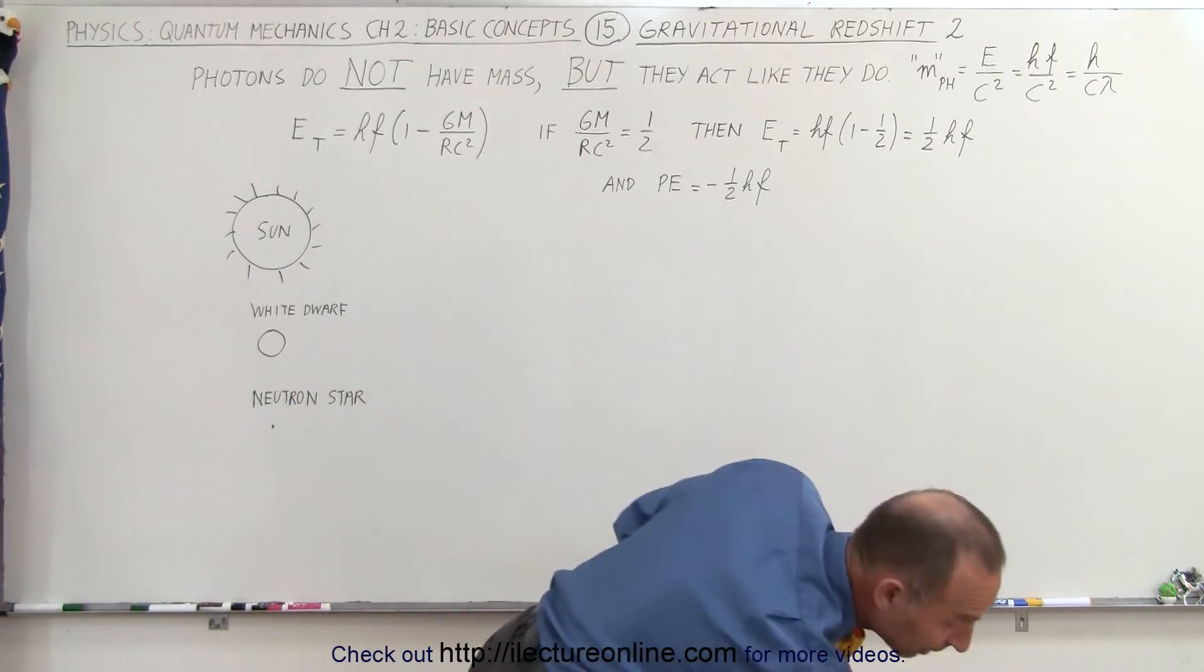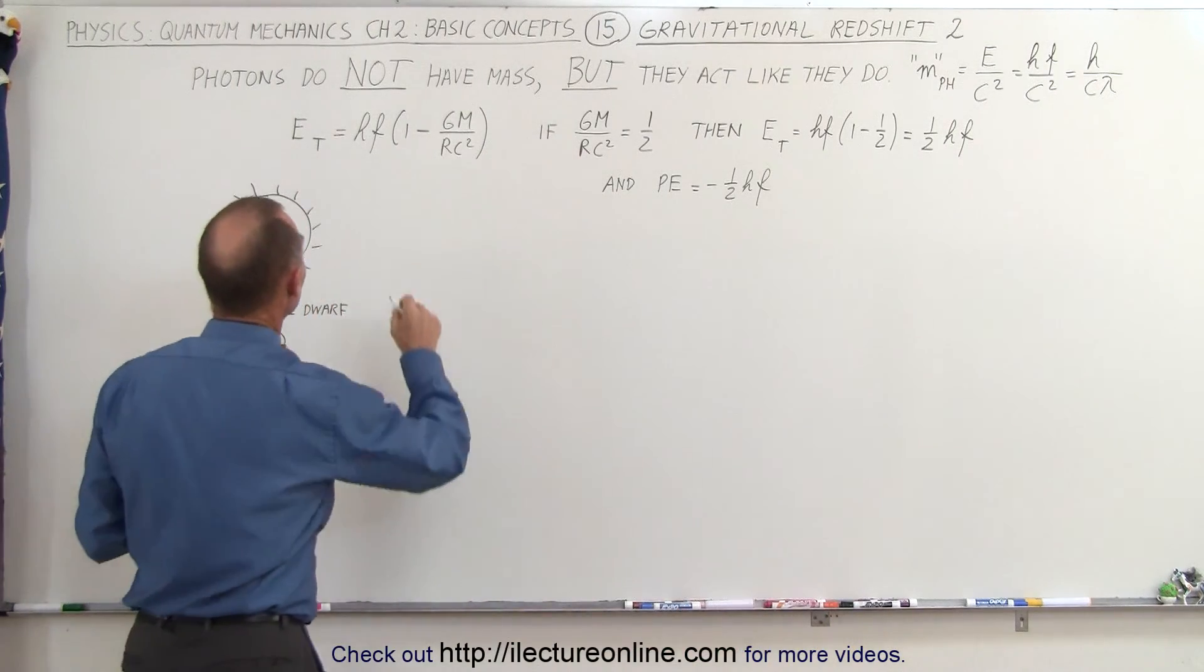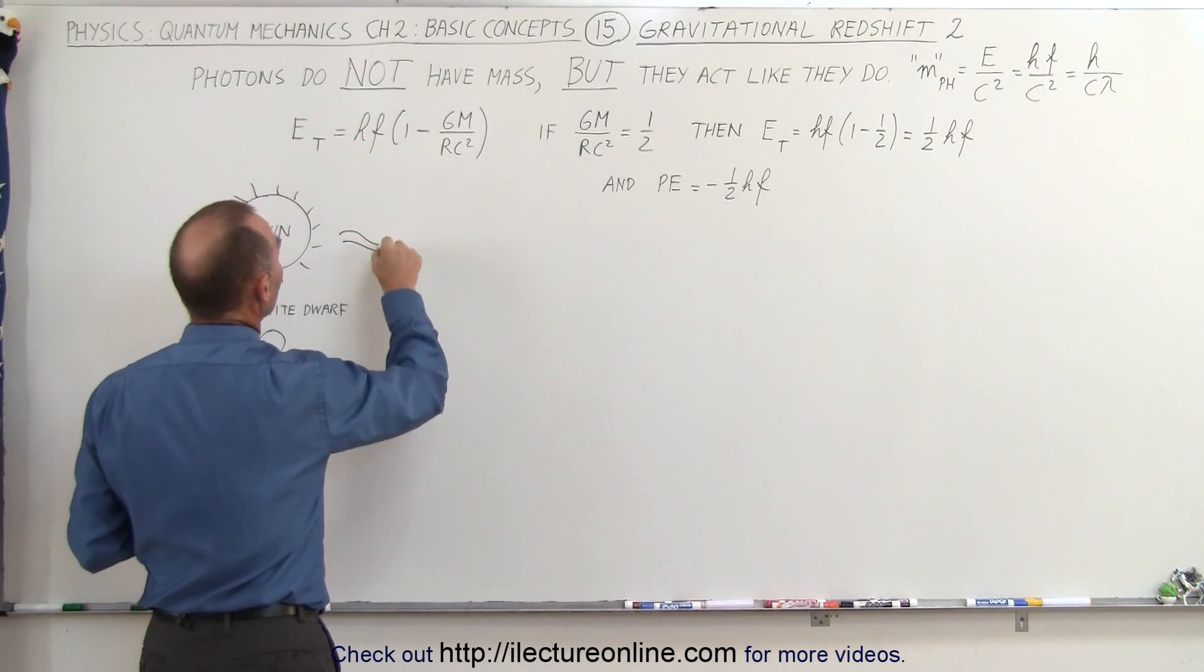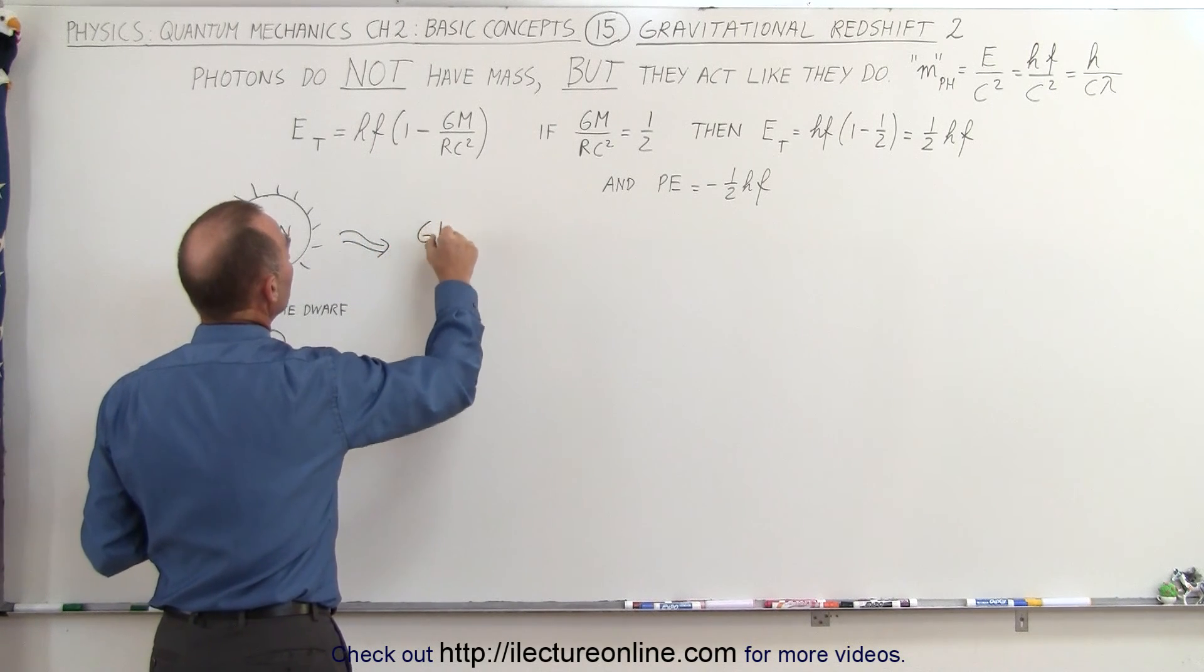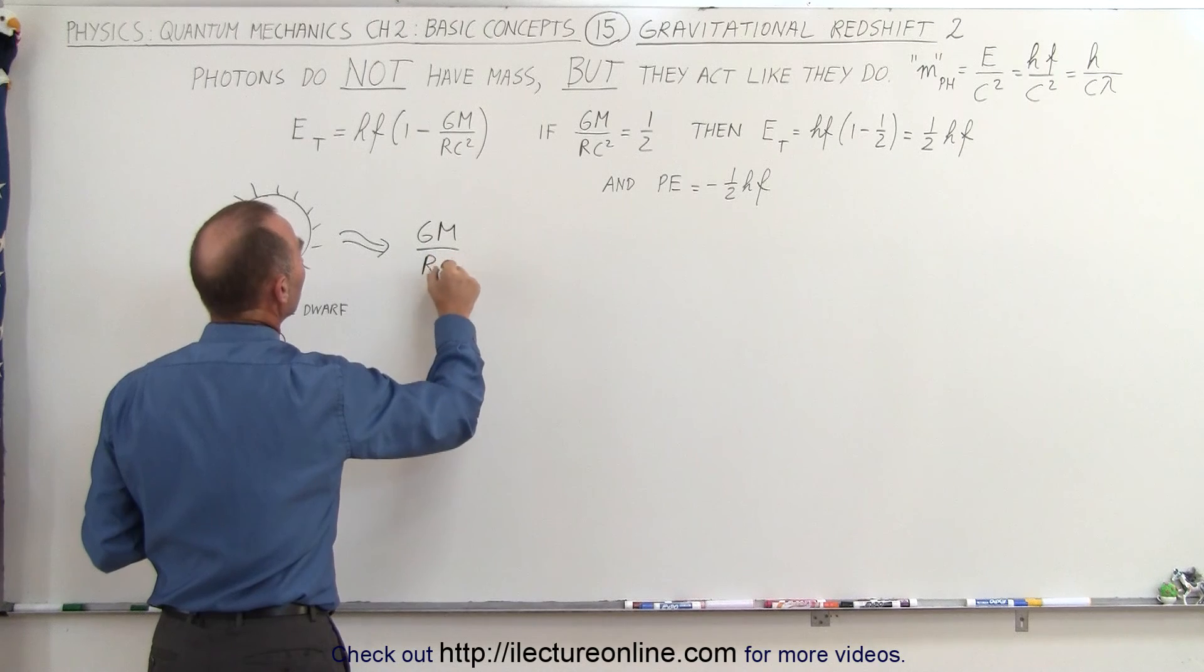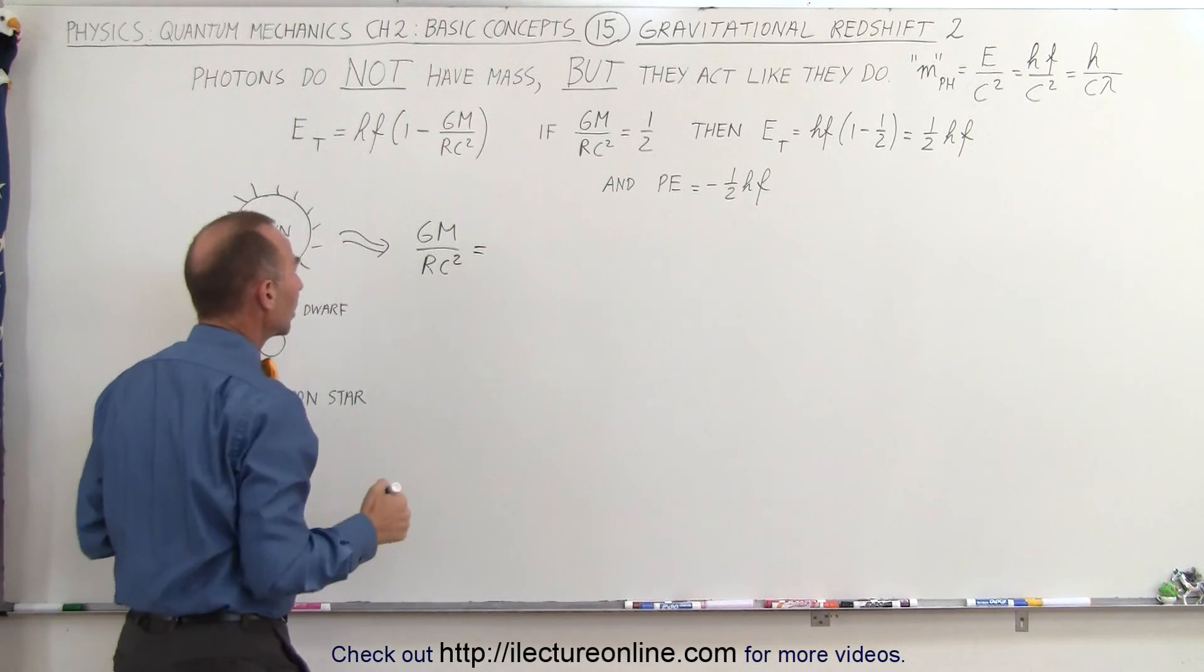I'm going to need my calculator. Let's first try the sun. For the sun, we're going to calculate GM over RC squared using the radius of each object.